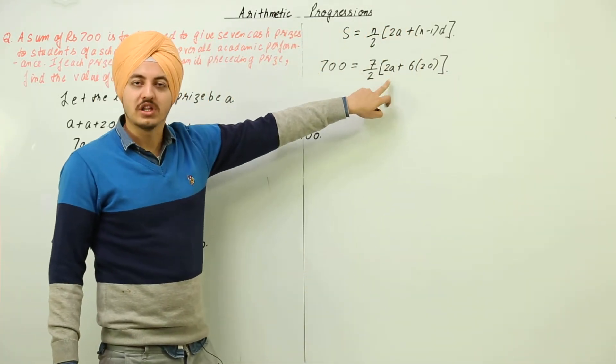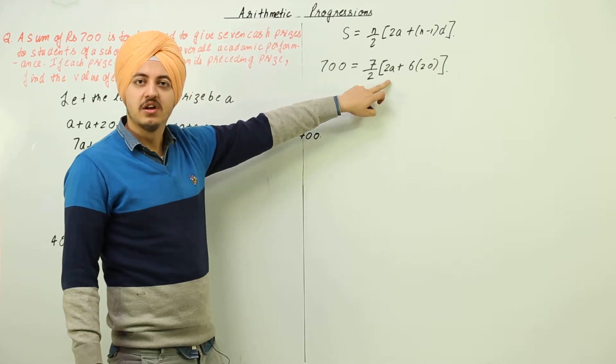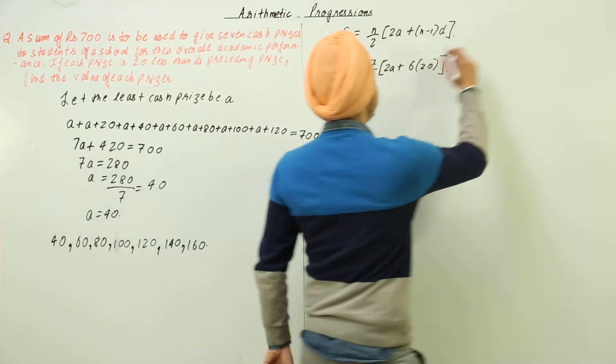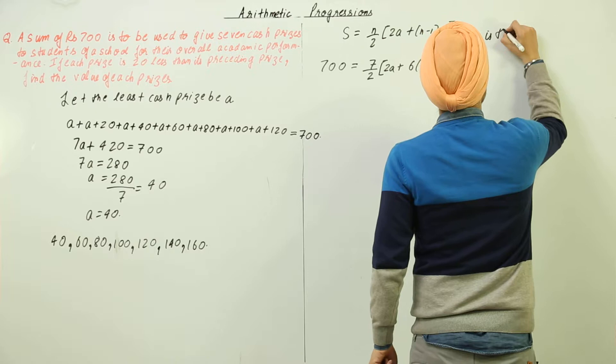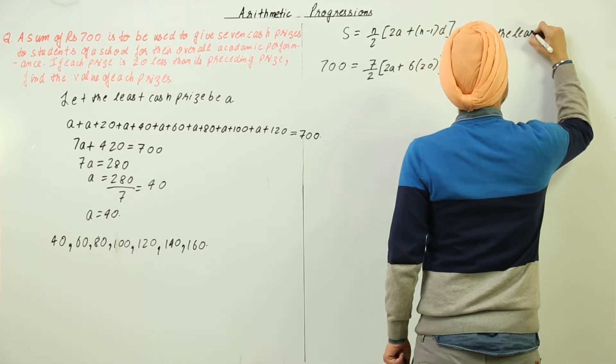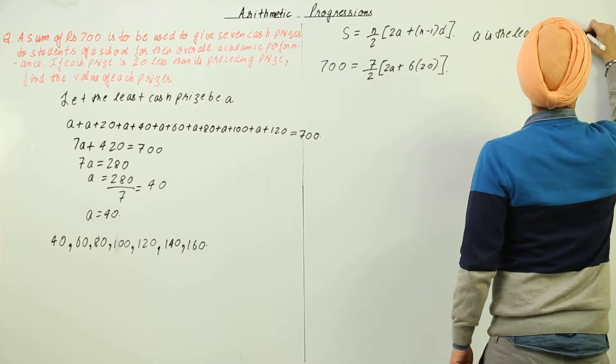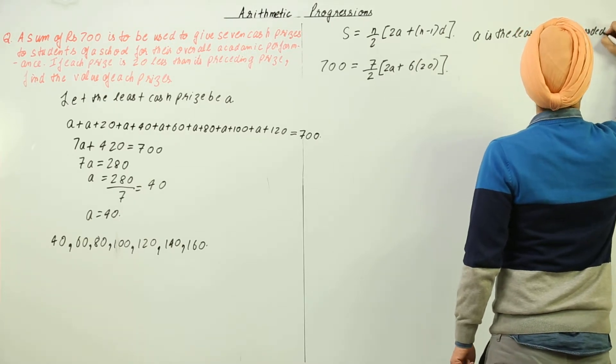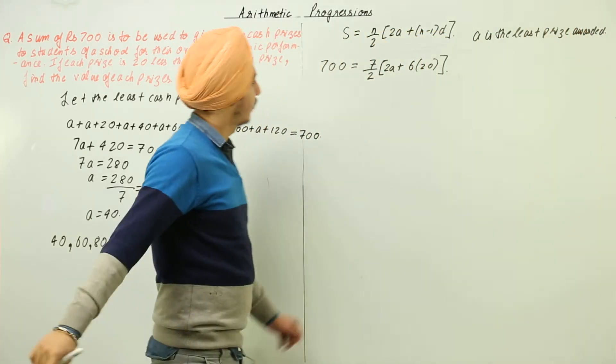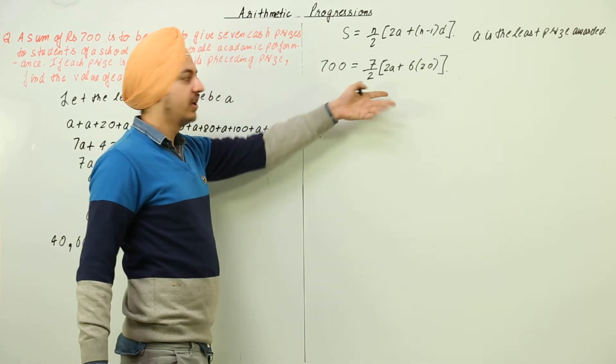Now again a here is not the maximum but the least price awarded. Now from here you can find out the value of a. It is again going to be very easy.